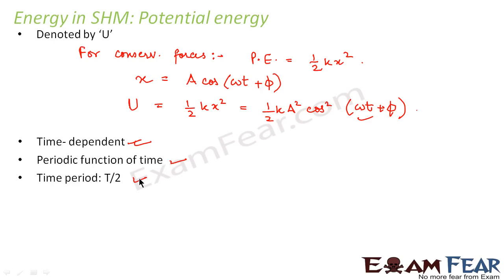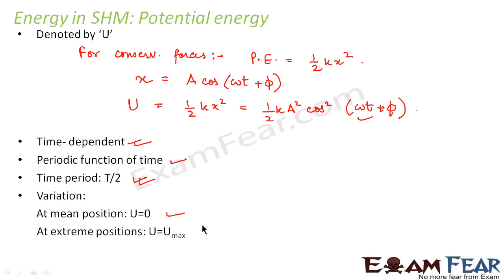The time period being T by 2 is left as an assignment for you — find out how the time period for the kinetic energy and potential energy functions comes out to be T by 2. The variation of potential energy is the reverse of kinetic energy. The potential energy is maximum at the extreme ends and minimum — that is zero — at the mean position. At the two extreme positions, potential energy is maximum.